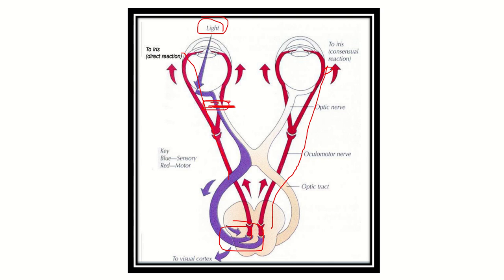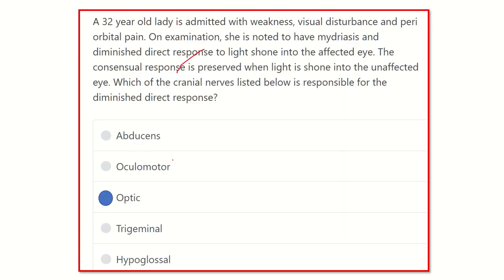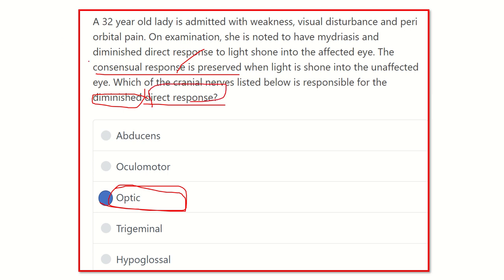However, when the optic nerve is damaged on one side and light is shown in the other eye, light travels to the visual cortex and signals go to both eyes. So during optic nerve damage, the direct light reflex will be lost but the consensual light reflex will be preserved — meaning when light falls into the other eye, the damaged eye also constricts. Therefore, our answer is the optic nerve: direct response is diminished but the consensual response is preserved. Thank you.